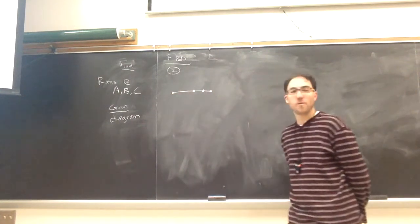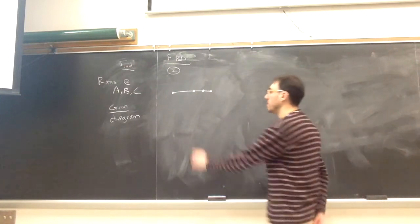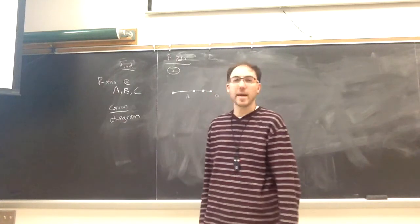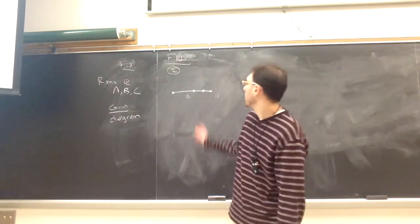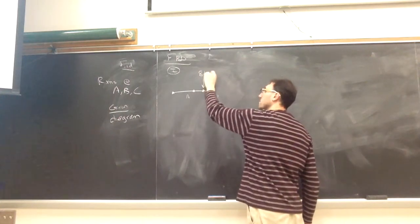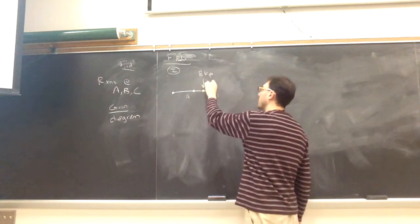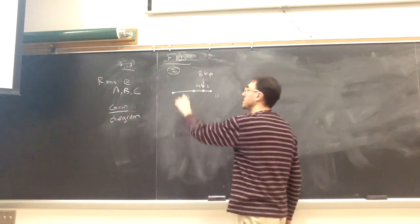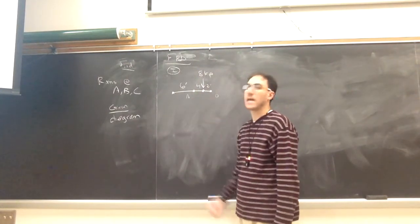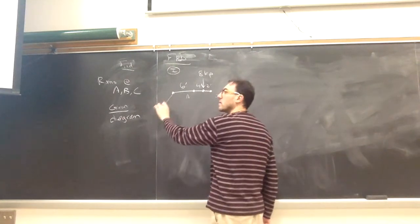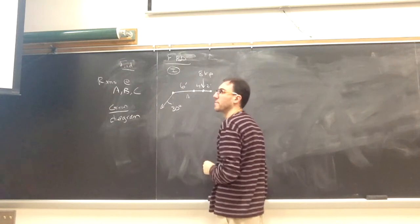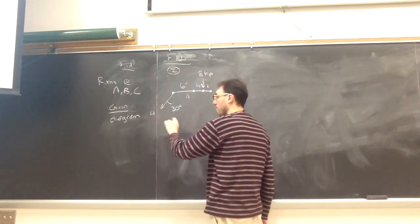So external forces that are acting on this. Here I have point A and point D. I have an eight kip force acting between A and D. And that's two feet, four feet, and six feet. I have another external force acting on this left end here. Thirty degrees from the horizontal, from the vertical of four kip.